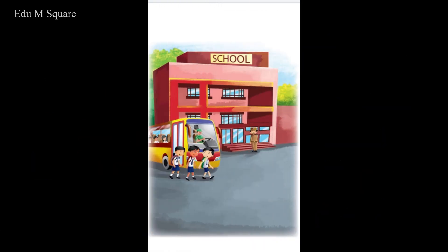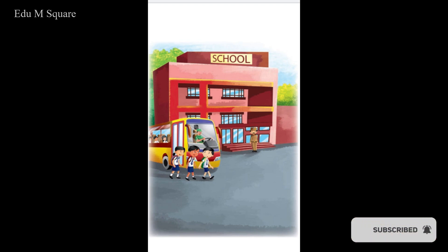This is a school. A school is a place where we learn to read, write, draw and paint. We make friends in a school and we learn to share our things with others. There are many places in a school such as classrooms, library, playgrounds, computer room, music room and medical room.